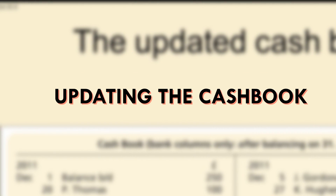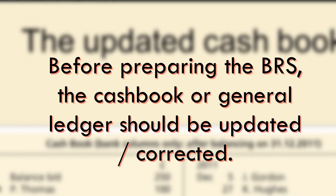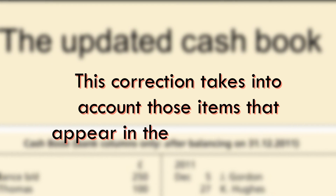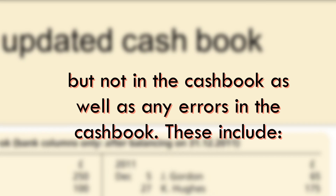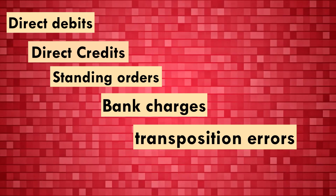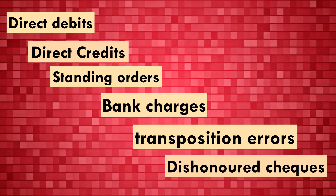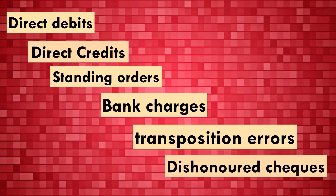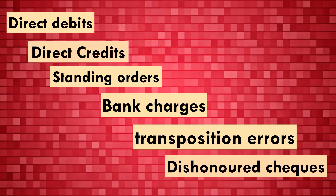Let's start with the first one, updating the cash book. Before preparing the bank reconciliation statement, the cash book or general ledger should be updated or corrected. This correction takes into account those items that appear in the bank statement but are not in the cash book, as well as any errors in the cash book. Notice that the items identified here are all affecting the cash book or general ledger because they may appear in the bank statement but do not appear in the cash book.